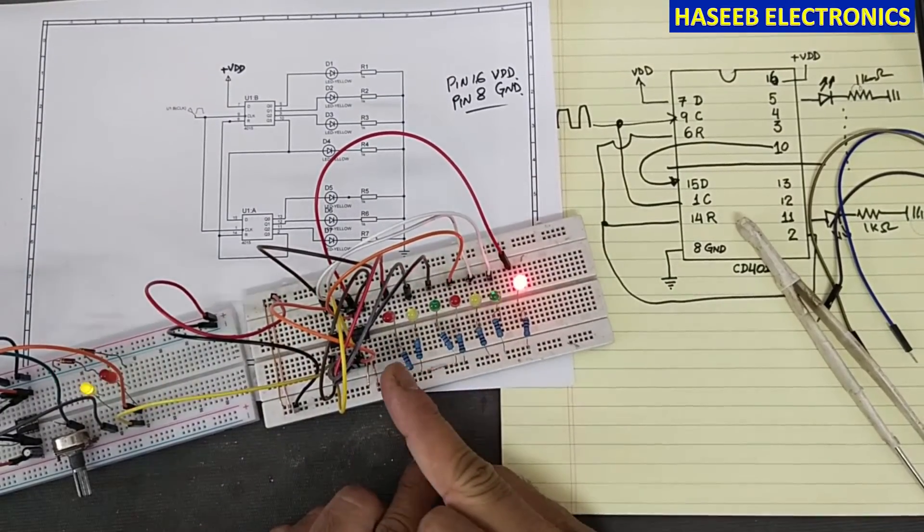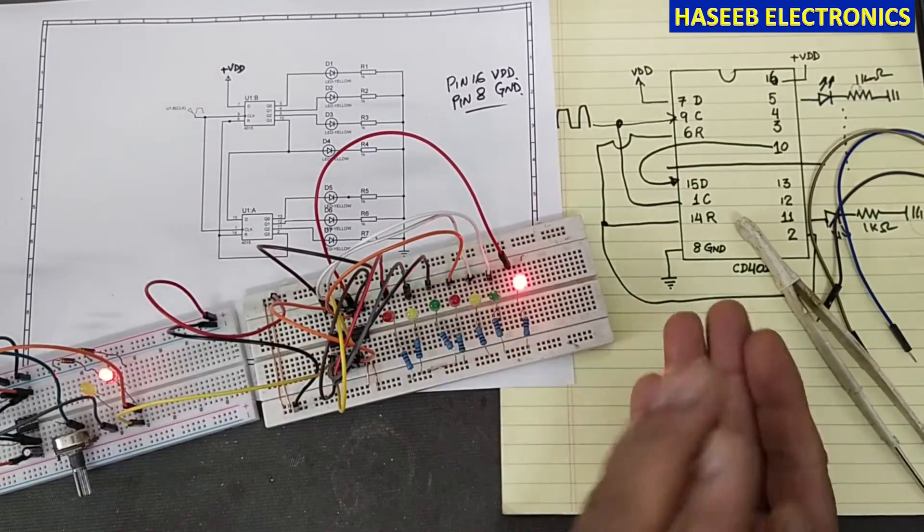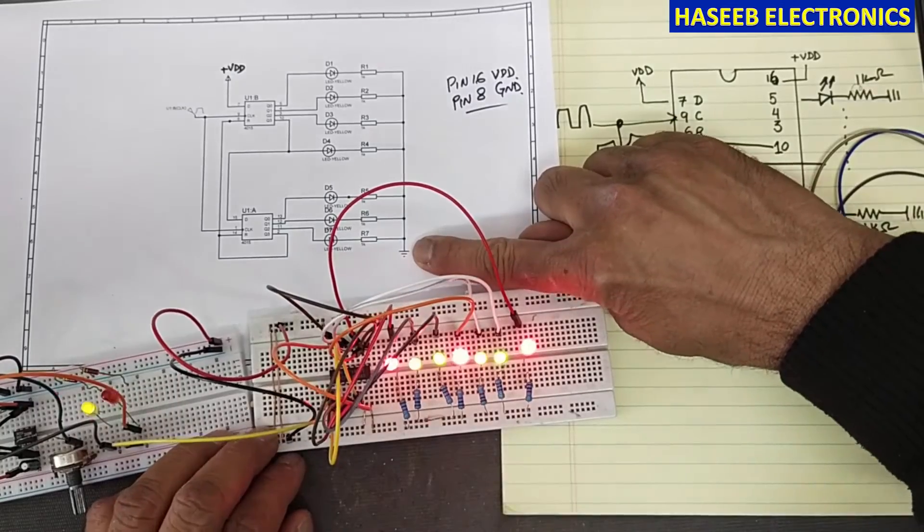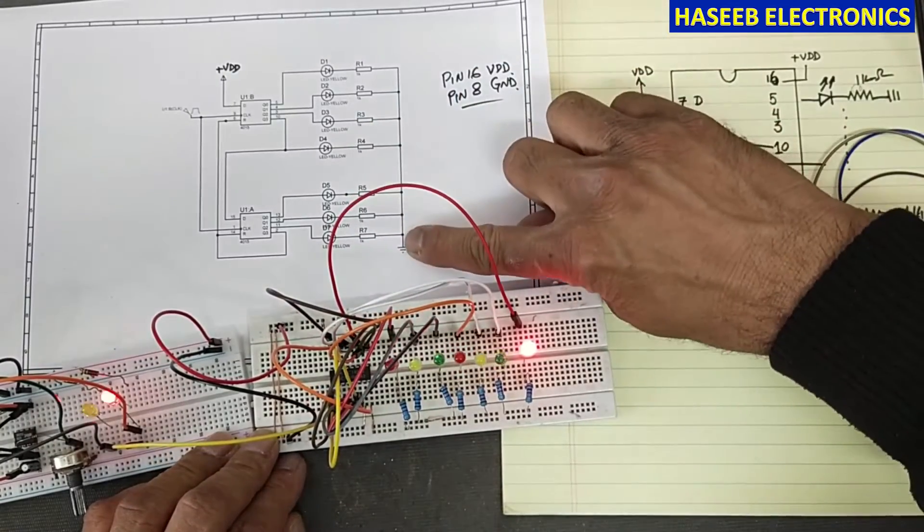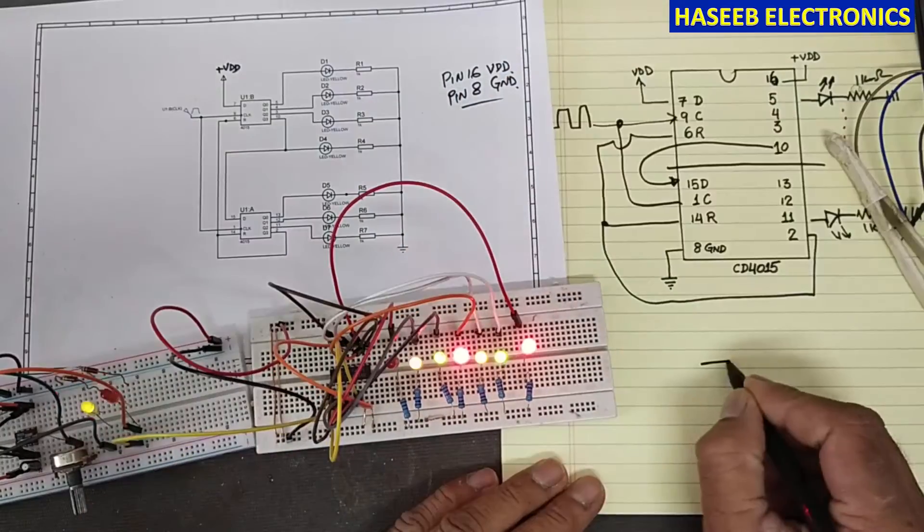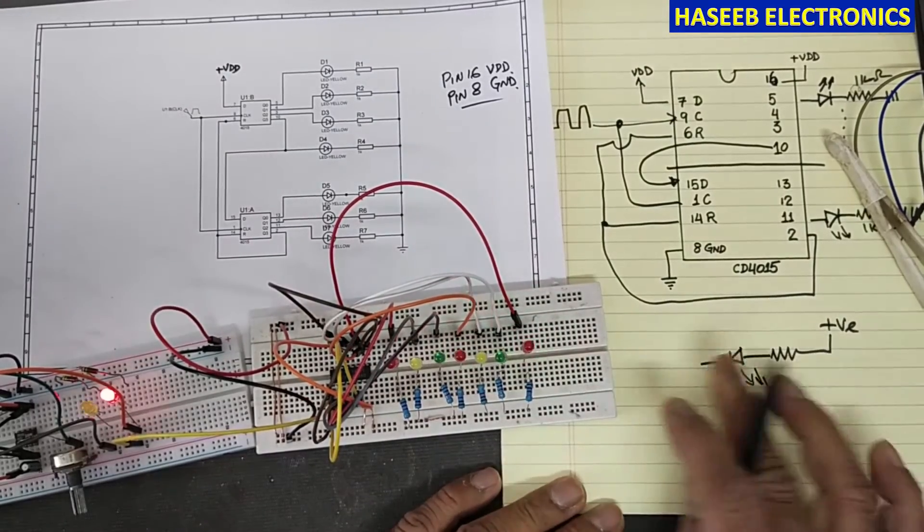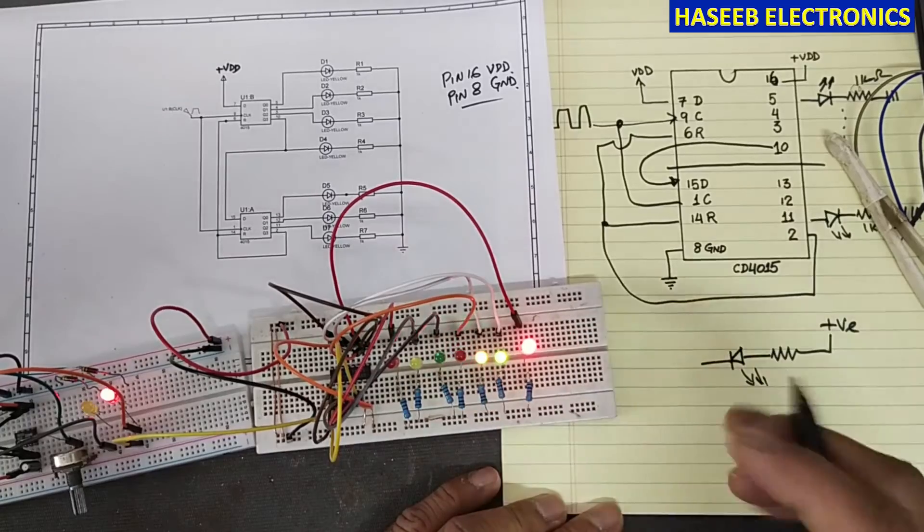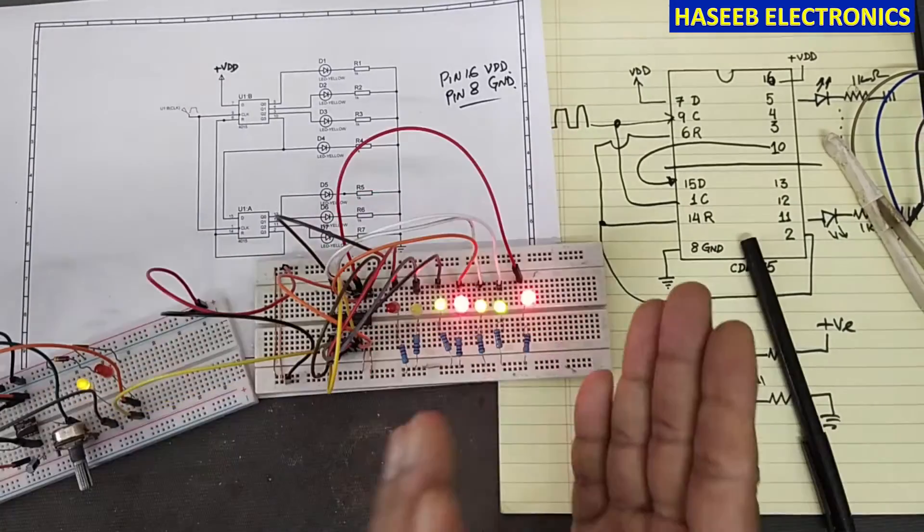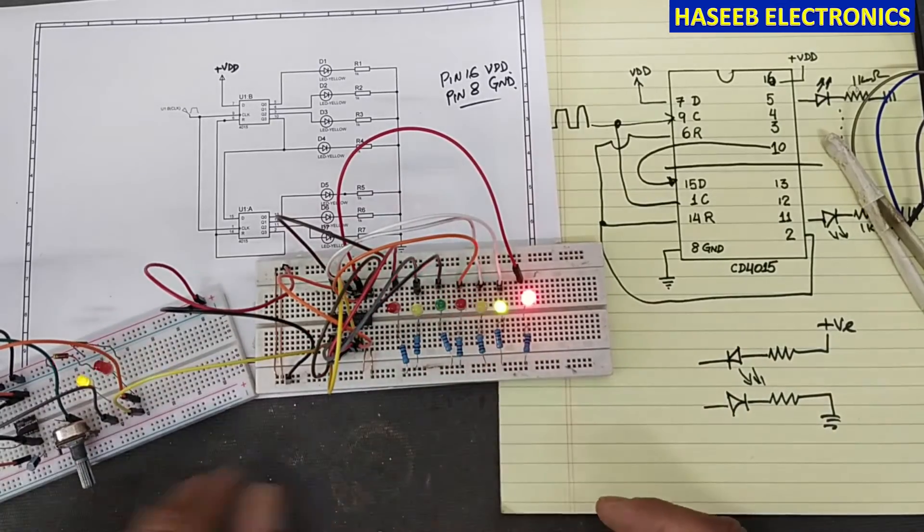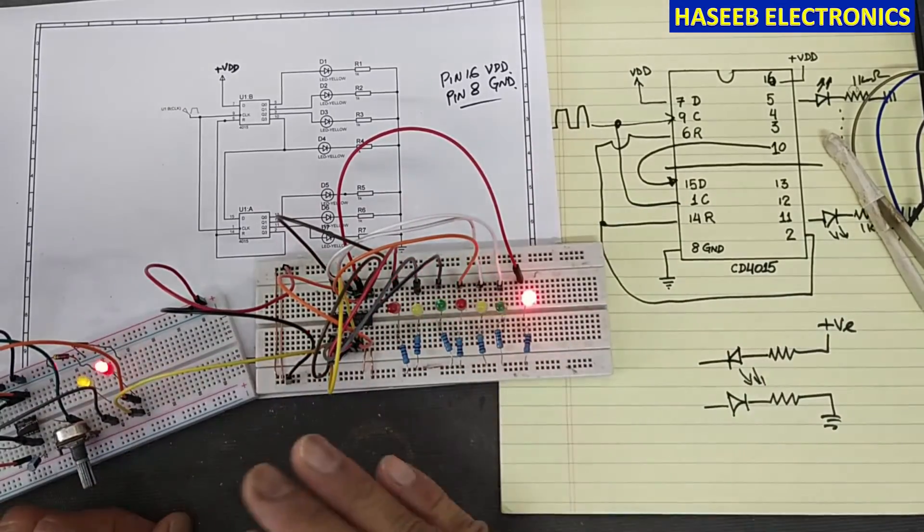Now we can see the response of the IC is changed. Before this, cathodes of the LEDs were connected to ground, but now we are connecting LEDs to positive. This is one condition, and the previous condition was the other. In these two ways we can use the same IC using this method or using the previous method.